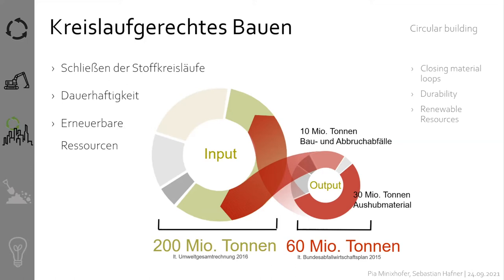Of course we have to close material loops as well as we can — using circular, recyclable materials that are durable and harmless to health. But that is not enough. This is why durability is of such high importance to us, because usage requirements for buildings and infrastructure change constantly. We need to design and dimension buildings so that basic structures can be easily expanded and don't have to be refurbished or renewed every time usage requirements change.